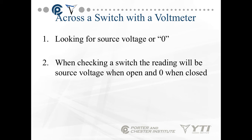When you check across a switch with a voltmeter, we're looking for source voltage or zero. The reading will be source voltage when the switch is open and zero when it's closed. Voltage readings across an open switch is source. Voltage readings across a closed switch is zero.